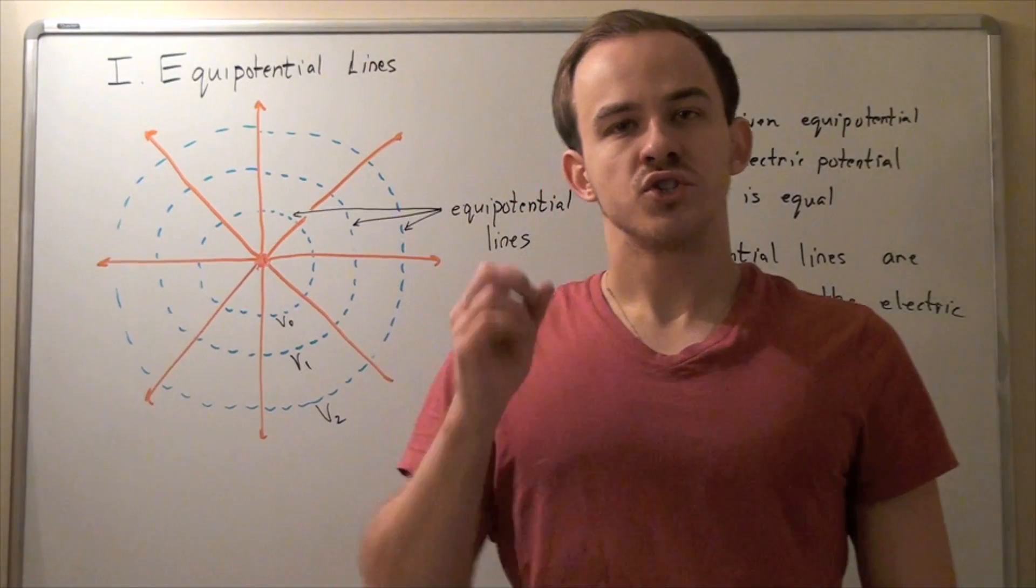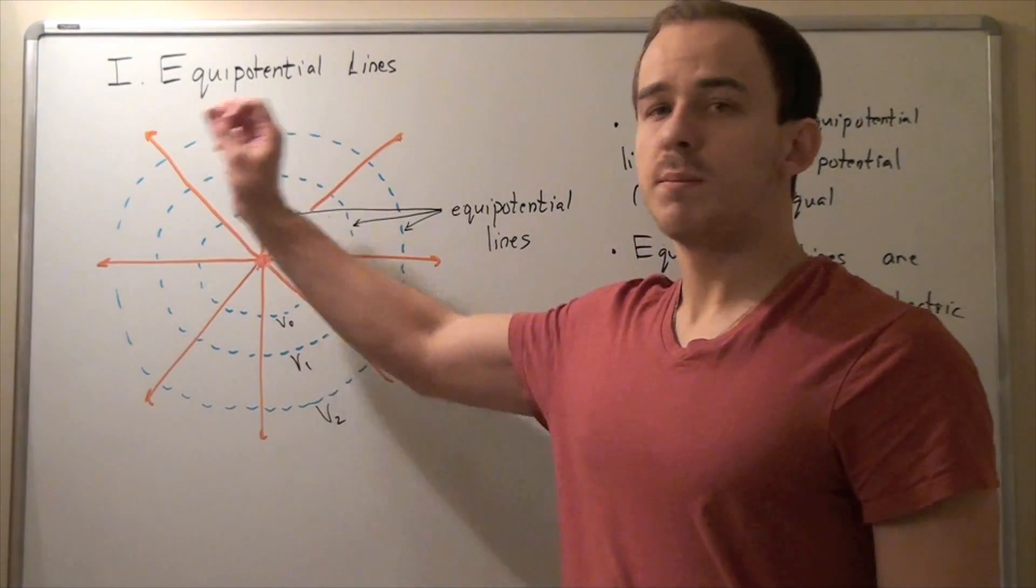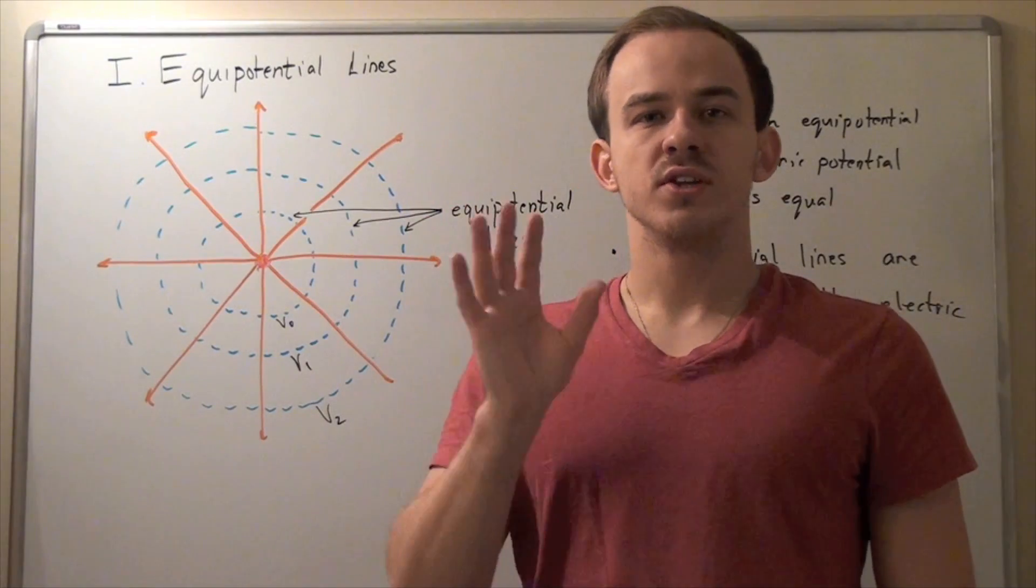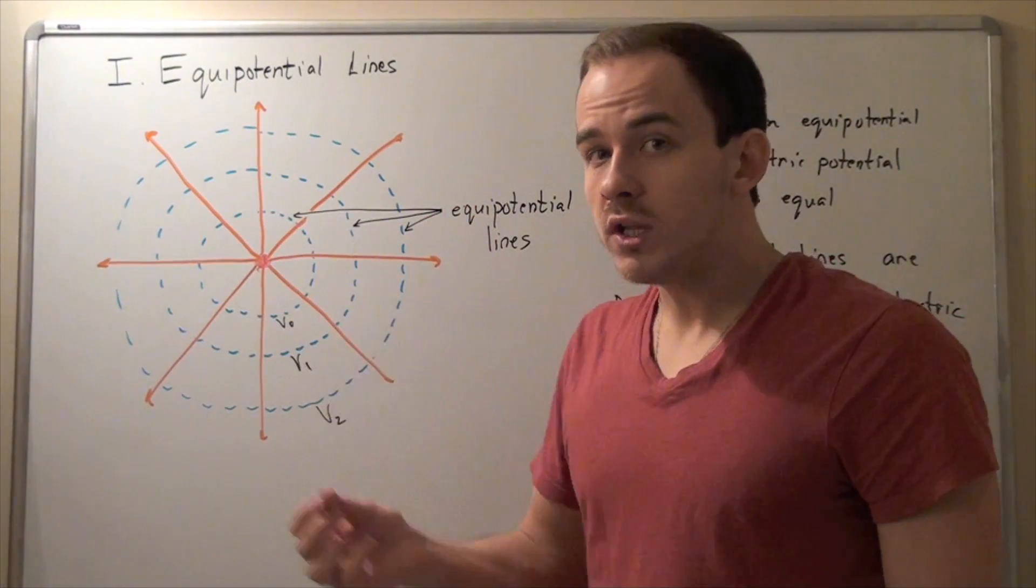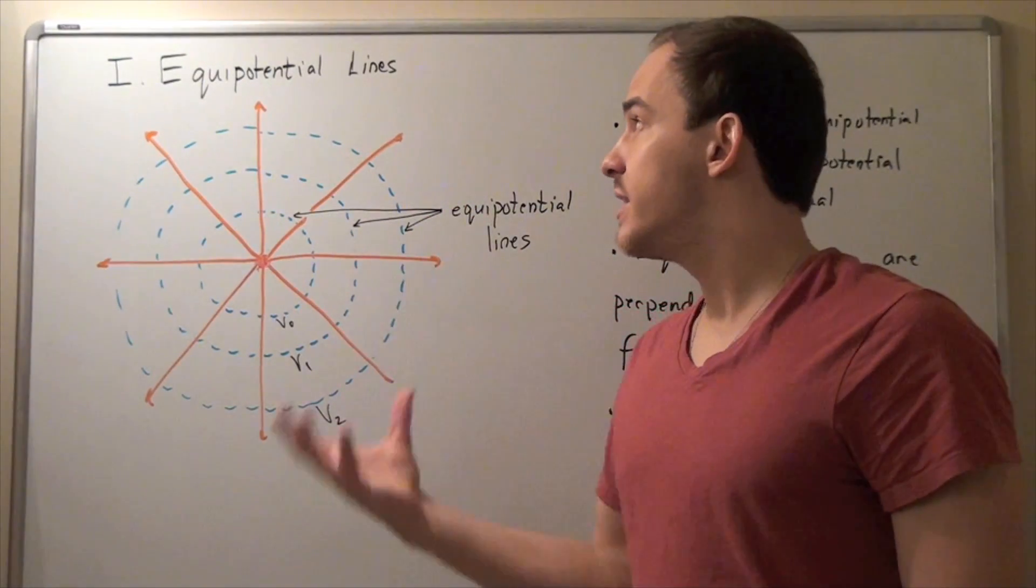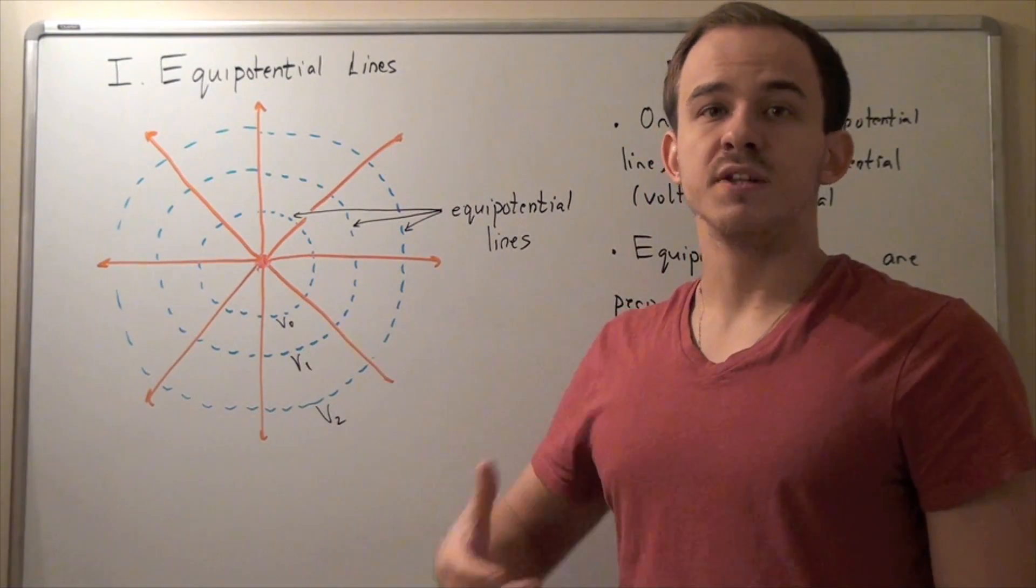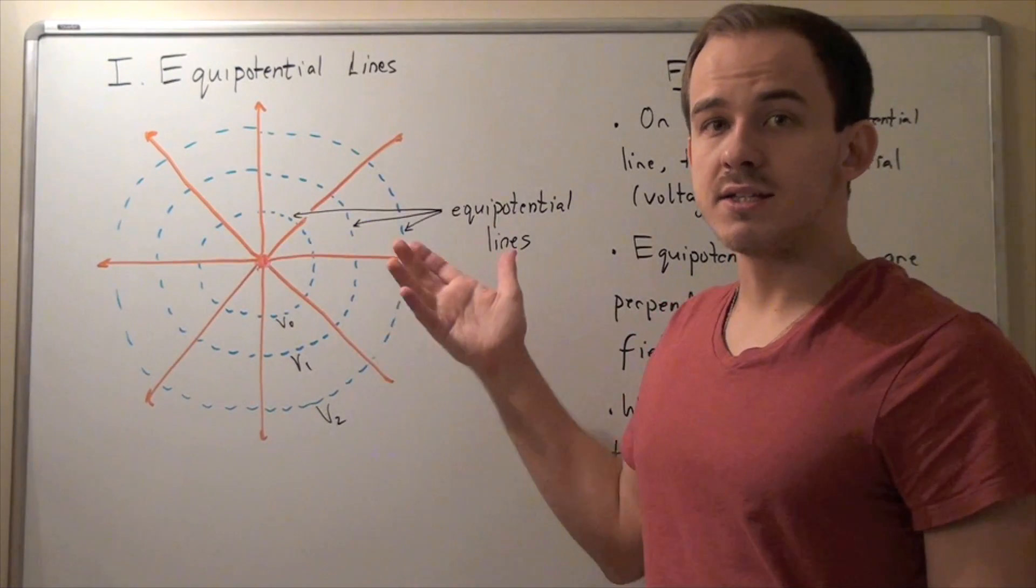In this lecture, I'd like to introduce a concept called equipotential lines. Equipotential lines are exactly what you think they are. They're equal potential lines. In this case, our potential being electrical potential or simply voltage. So, equal voltage lines.